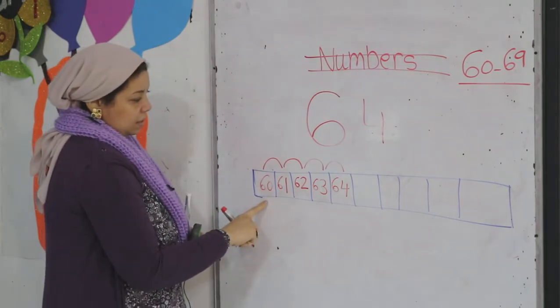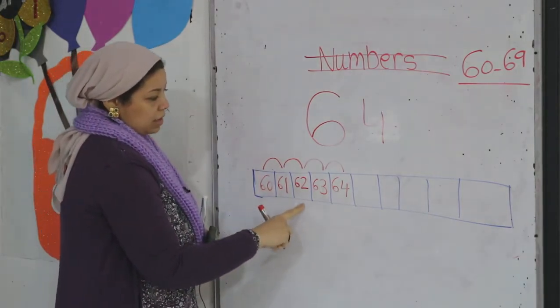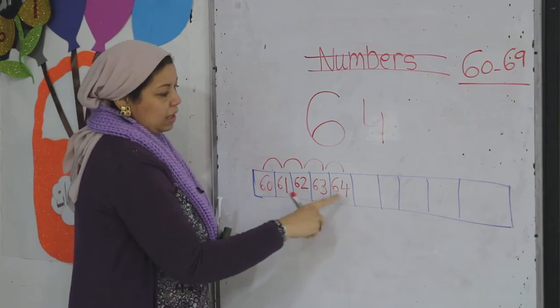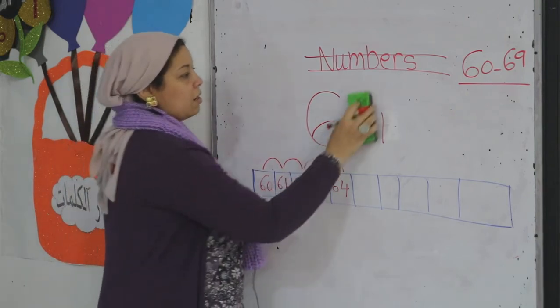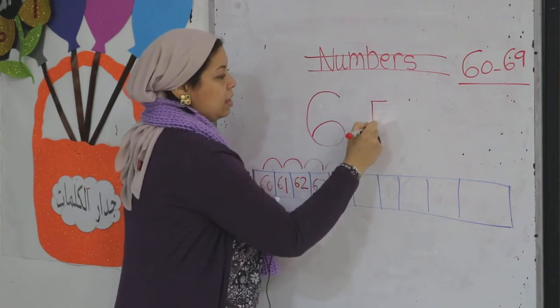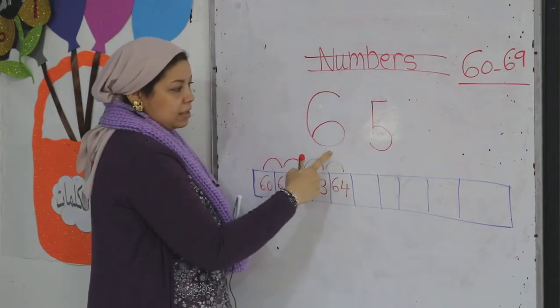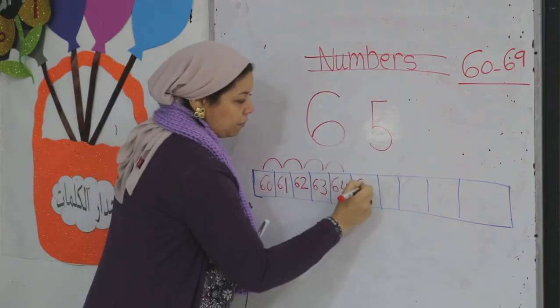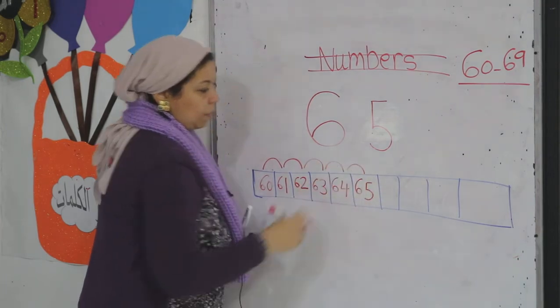So let's remember together: 60, 61, 62, 63, and 64. Then? Yes, 65.